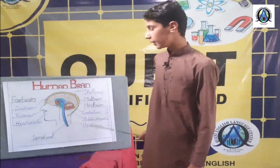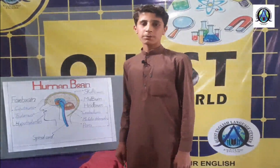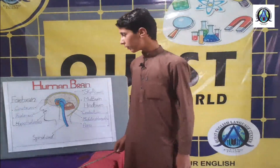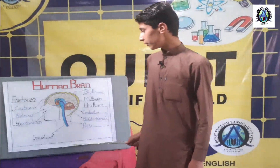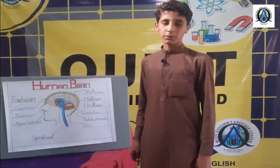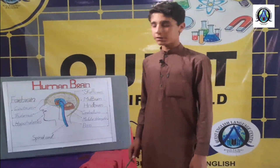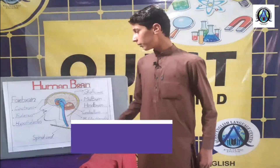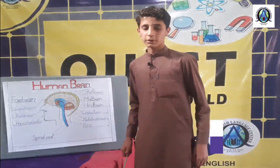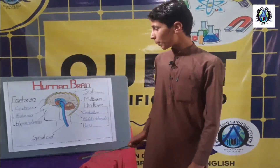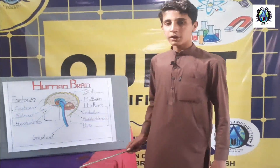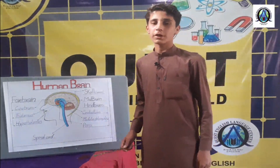Fore brain, mid brain and hand brain. First of all, fore brain is the largest part of the human brain, which is further divided into three parts: cerebral, thalamus and hypothalamus. Cerebral is the largest part of fore brain which consists of two hemispheres — left hemisphere and right hemisphere.